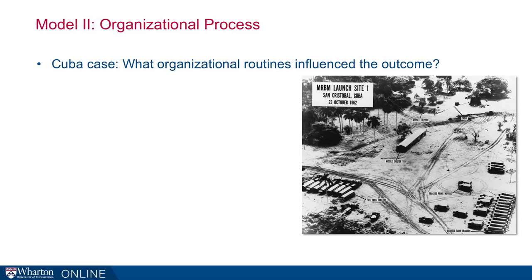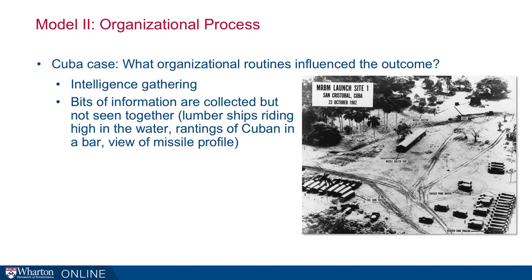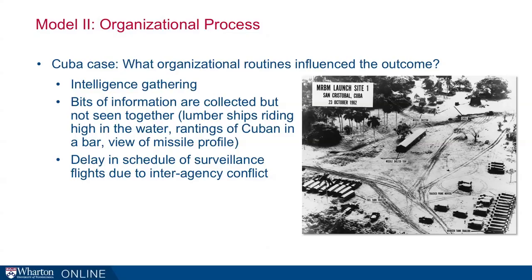How does this explain Cuba? Organizational routines influenced the outcome significantly. Consider intelligence gathering: bits of information were collected by various agencies — lumber ships riding very high in the water, a Cuban in a bar ranting about what was going on, a view of a missile profile — but these were in different parts of the organization. There was no routine for aggregating them, so they never rose into a conclusion. This anticipates the critique of the intelligence community after 9/11: routines just weren't built for aggregating into a unified picture.